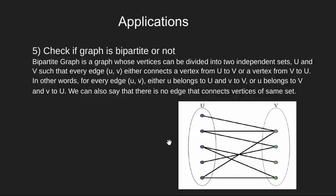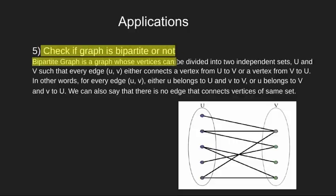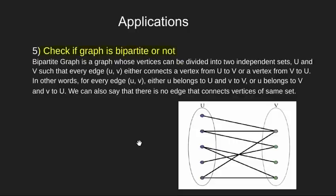The next application is to check if a given graph is bipartite or not. Bipartite graph is a graph whose vertex can be divided into two sets such that there is no edge between two vertex of the same set.